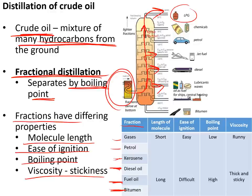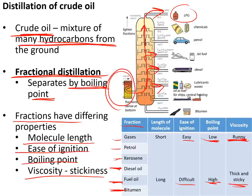These fractions go in order from shortest to longest molecules — gases are shortest and bitumen is longest. Gases are easiest to ignite; bitumen is hardest. Gases have the lowest boiling point; bitumen has the highest. Gases are least viscous (runniest), and bitumen is most viscous (thick and sticky).